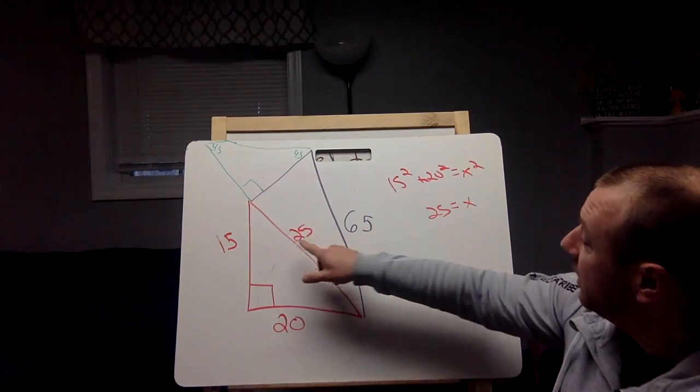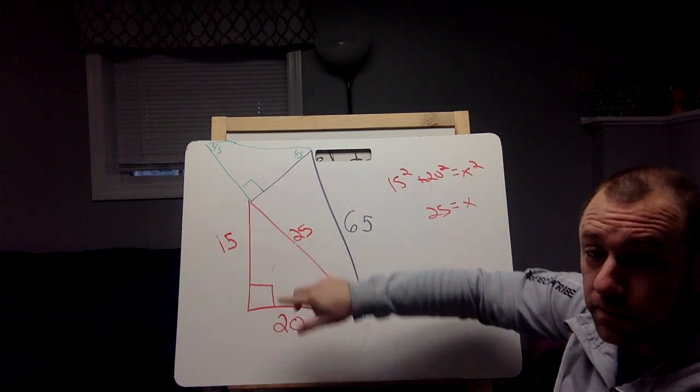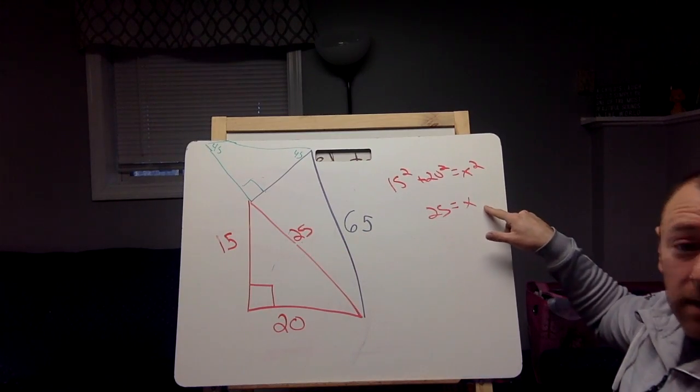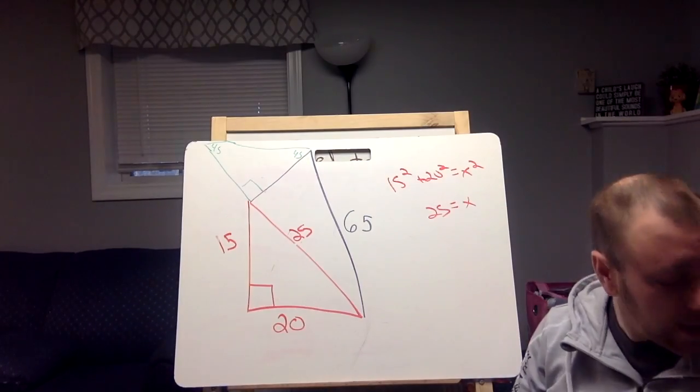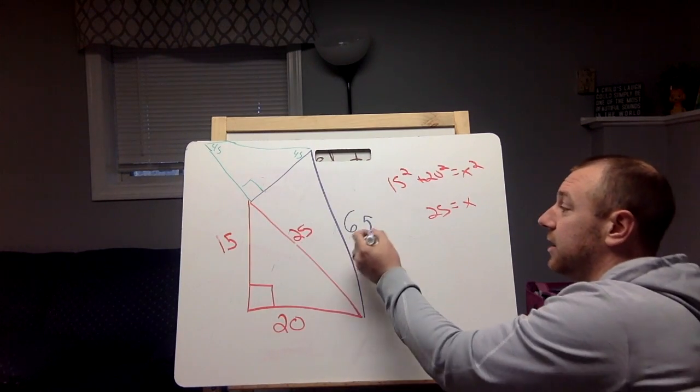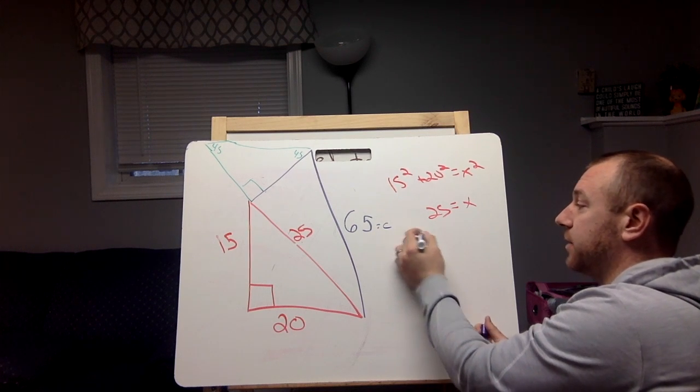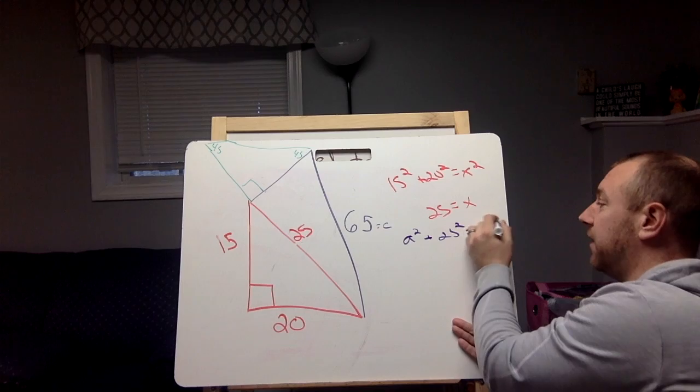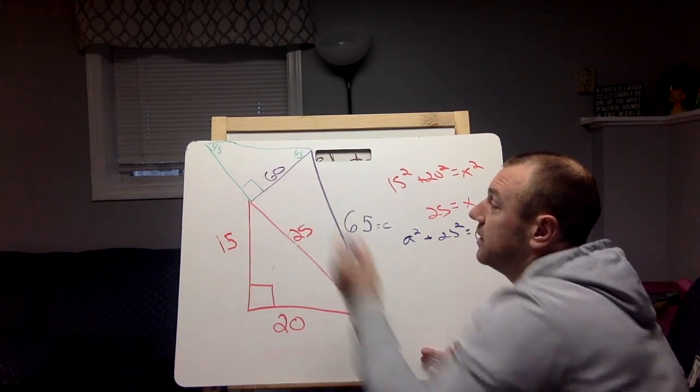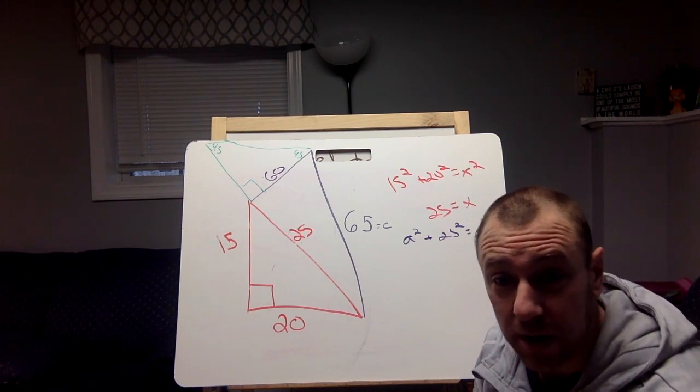So this 25 is now shared with this purple triangle in here. So now I have two sides of this triangle that I can then do Pythagorean theorem again and I can solve for my missing side here. In this case, this is going to be my c. So it would be a squared plus 25 squared equals 65 squared. This is now going to be 60. Now, this is definitely not drawn to scale whatsoever.